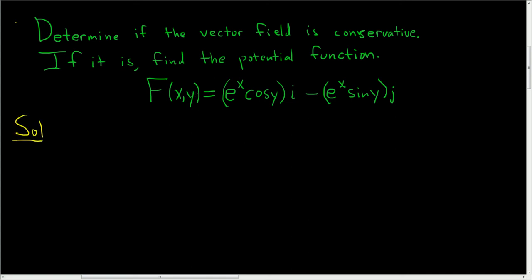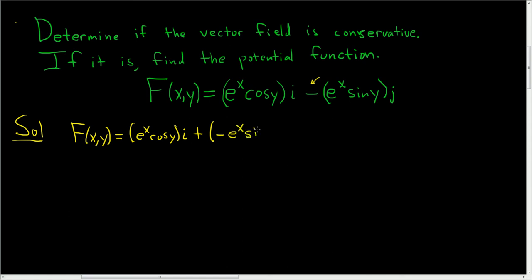First, let's rewrite our vector field. We have a minus sign here, and we really want it to be a plus sign first. So F of xy is equal to (e to the x cosine y) i plus (negative e to the x sine y) j.